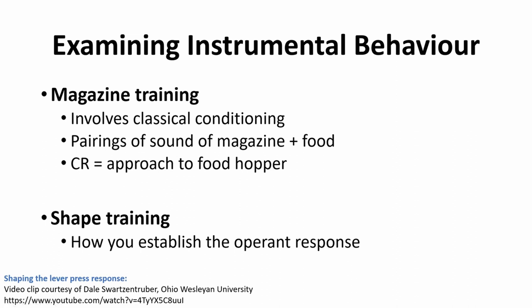These operant procedures are all well and good, but behaviours like a bird responding to a sound by sitting in a feeder, a rat pressing a lever, or a pigeon pecking a key aren't behaviours that occur naturally — they would have had to have been trained. We need to show the organism what to do to get to that stage. That's where we get shaping: you can shape their behaviour to get them to do things they wouldn't normally do, and that's how we establish our operant response — pressing the lever, pecking the key, or flying into the feeder.